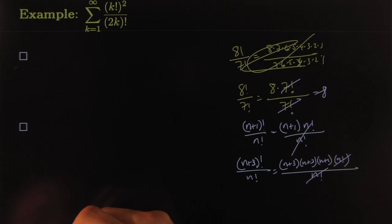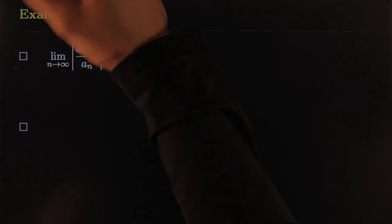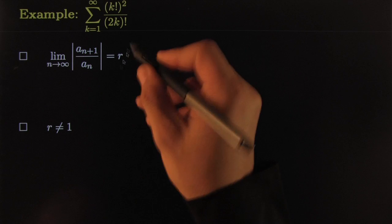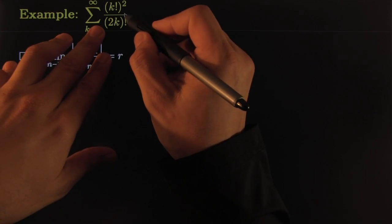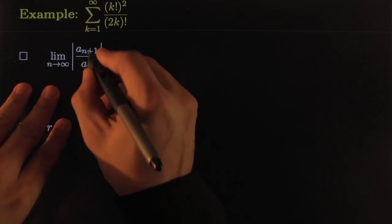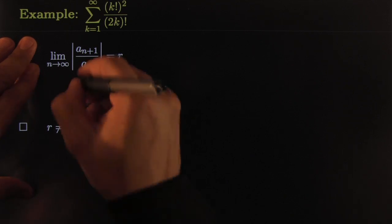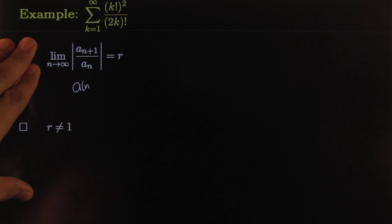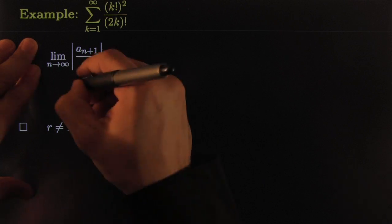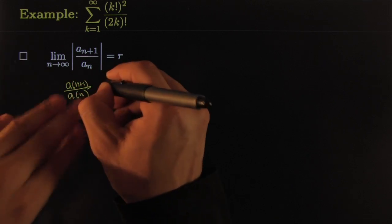Talk is cheap — let's do it. You know the drill: we're going to find the ratio, check that it's not equal to one, declare it's like a geometric series, and see if it converges based on the value of R. I don't need absolute values because everything is positive. So I'm going to write a_{n+1} divided by a_n.